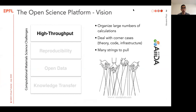In computational materials science research, if you want to do high-throughput research, you end up organizing a very large number of calculations and you have to deal with a lot of corner cases. The theory is not adequate, your code might crash, your infrastructure might go down, and so you have many strings to pull and you have to coordinate all of this.